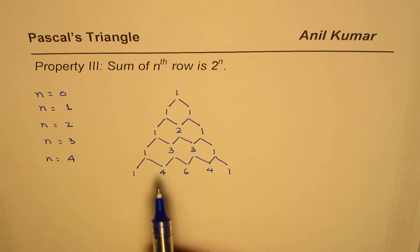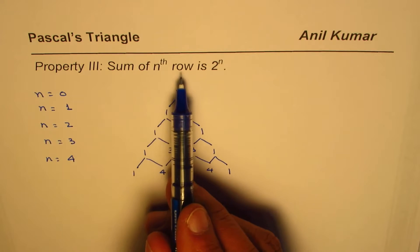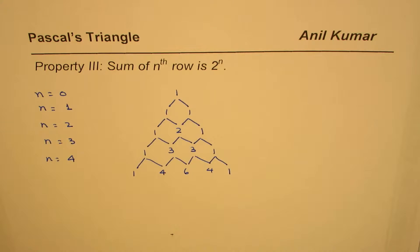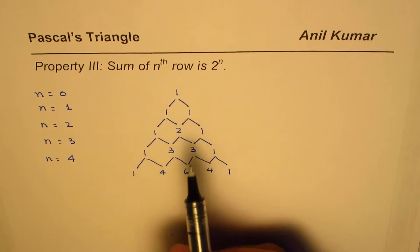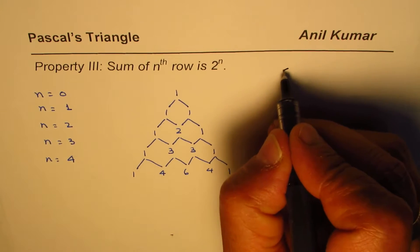Now what we are trying to say here is that sum of nth row is 2 to the power of n. So let's add and then figure it out. Let's find the sum in this column.